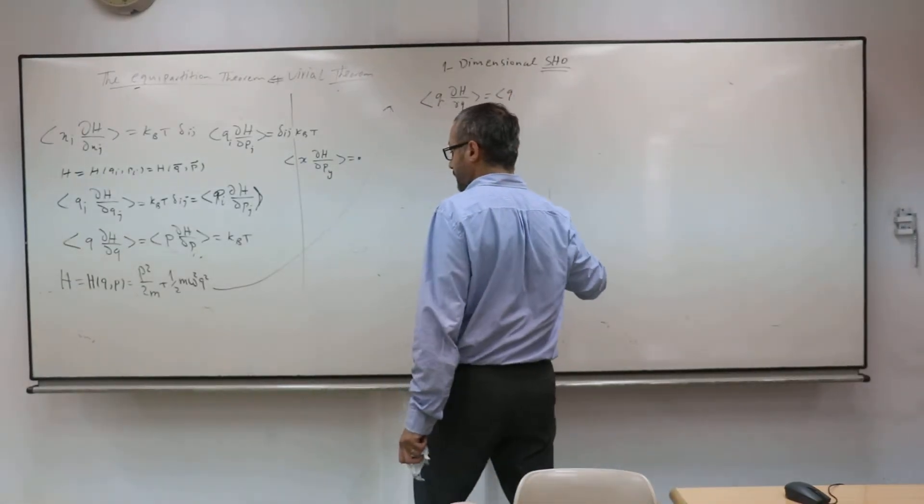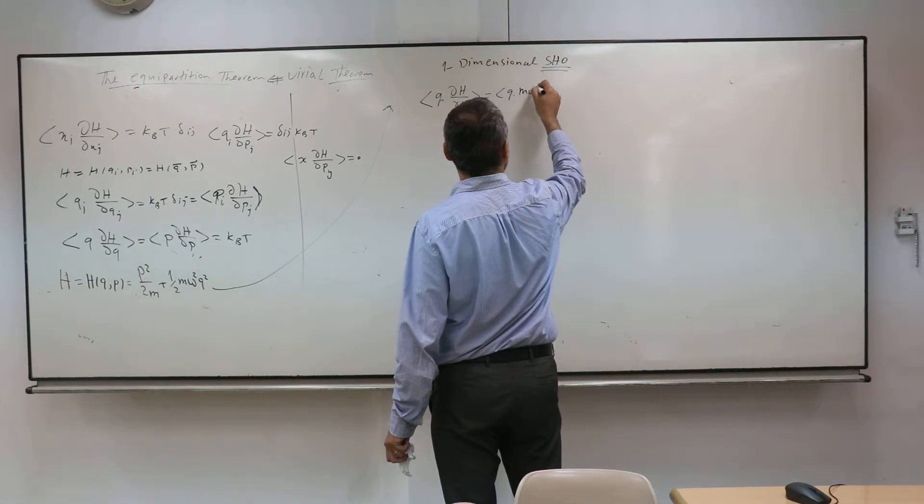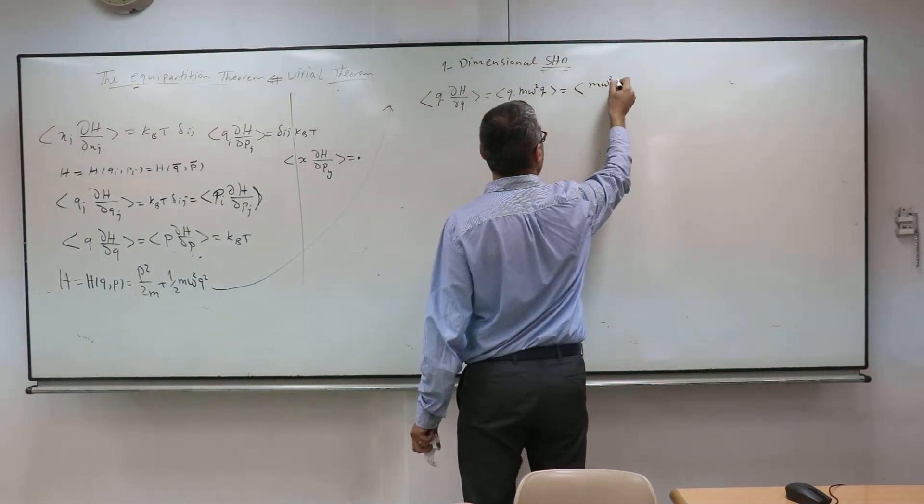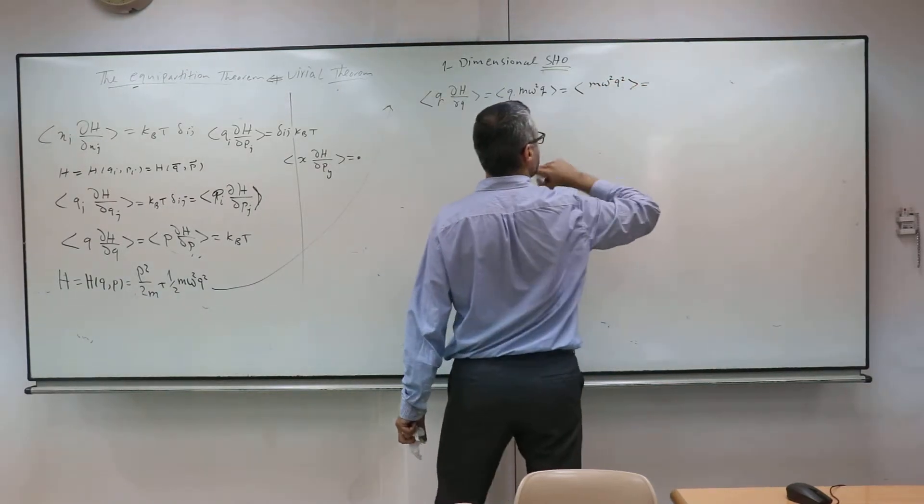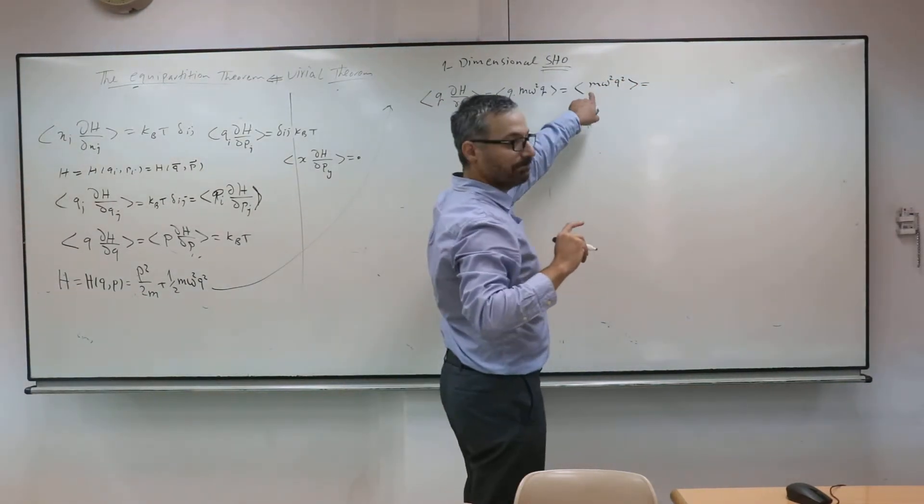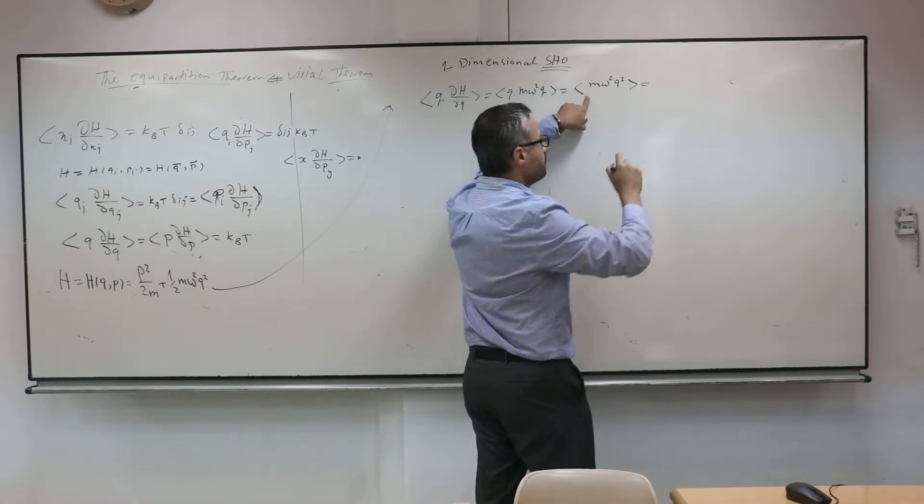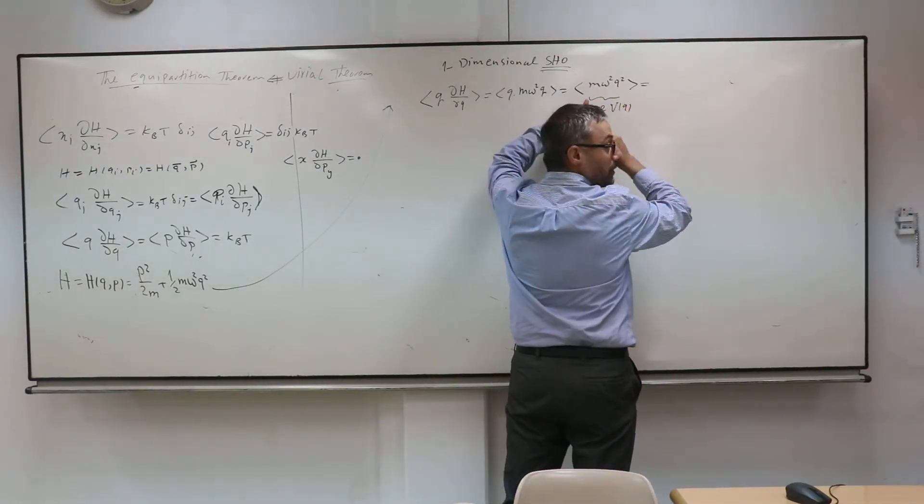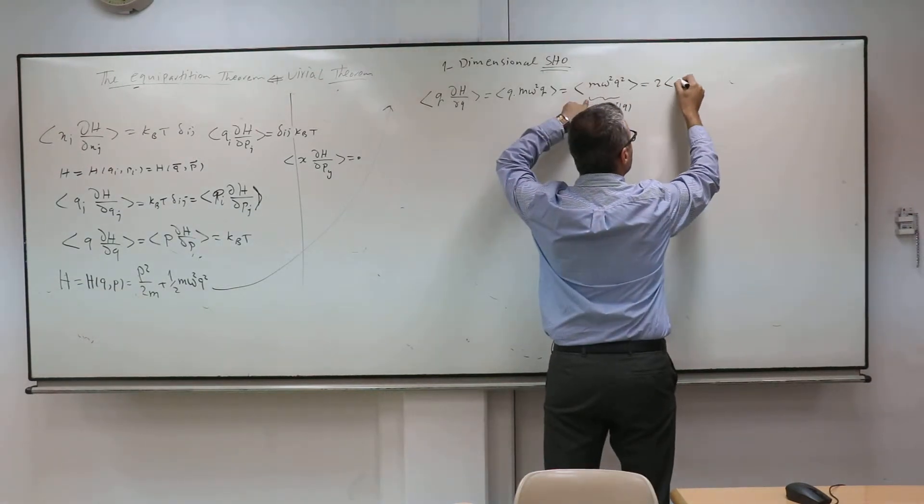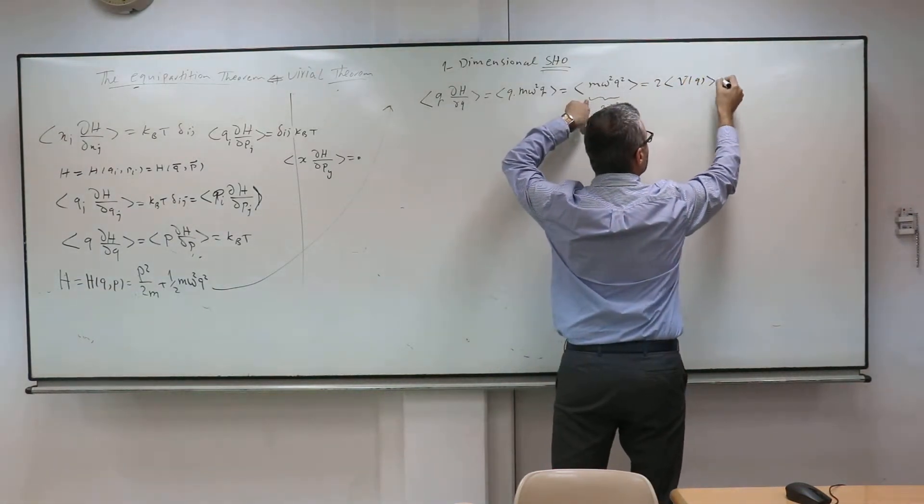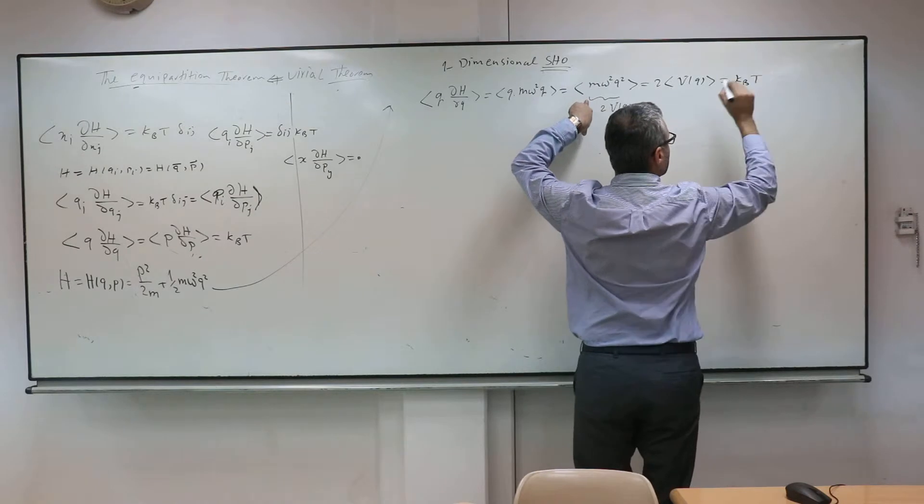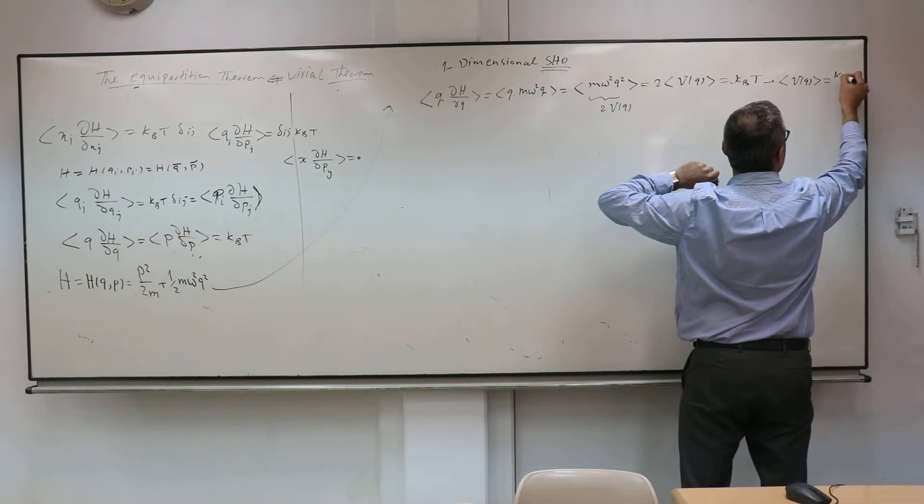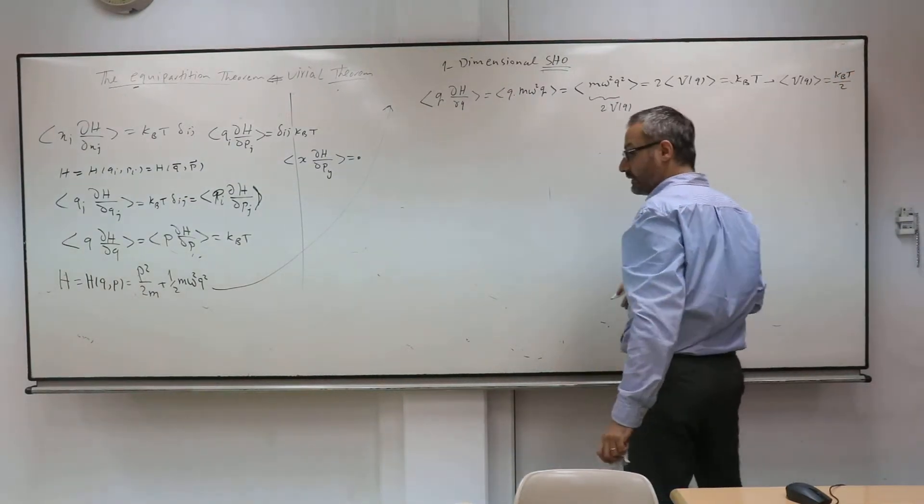What is partial A with respect to Q? M omega squared. And what is that? Double of the potential. And according to the equipartition theorem, it should be that. So expectation value of the potential between KBT.